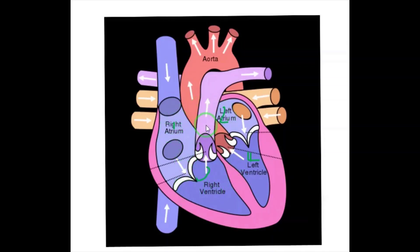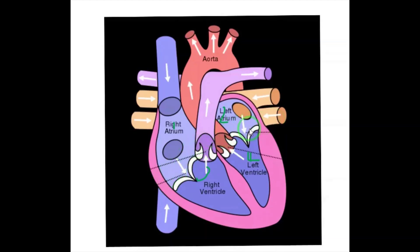The auricles are thin-walled chambers, while the ventricles are thick-walled chambers. The chambers are separated by a partition called the septum. The upper chambers are known as auricles and the lower chambers as ventricles.